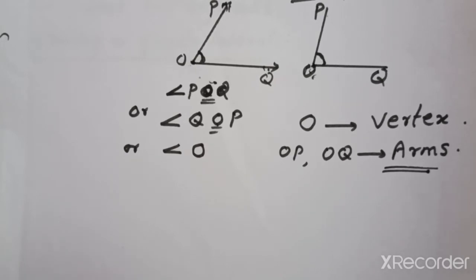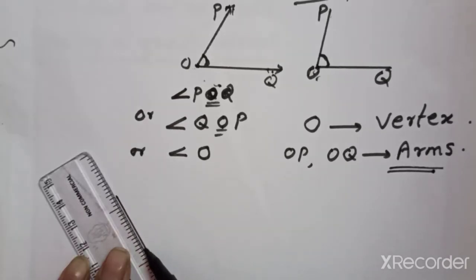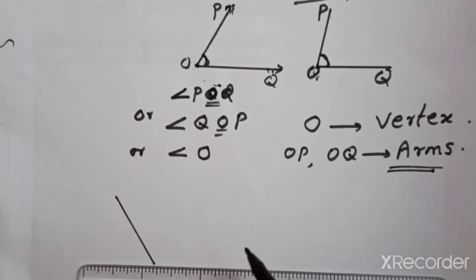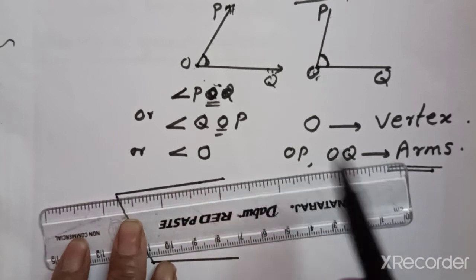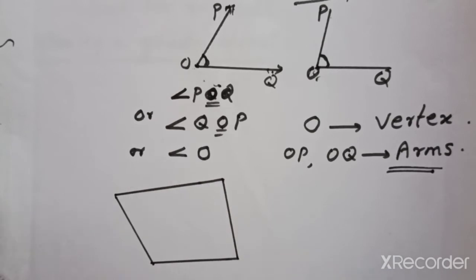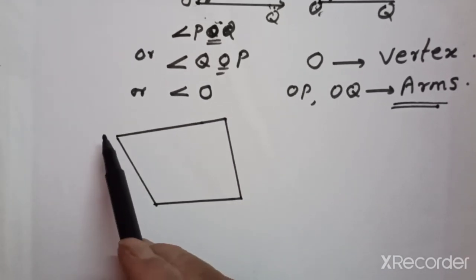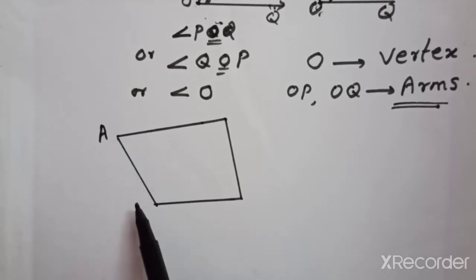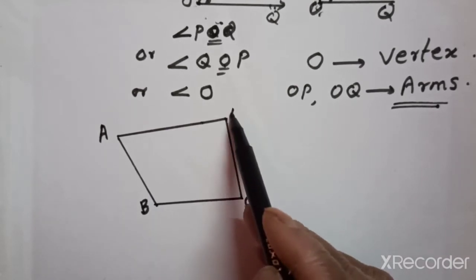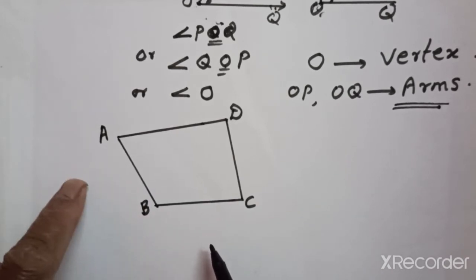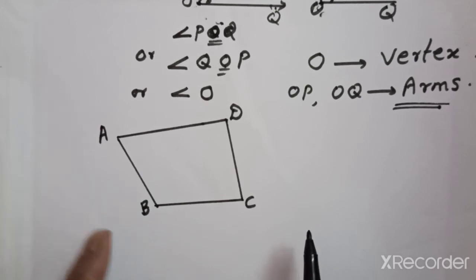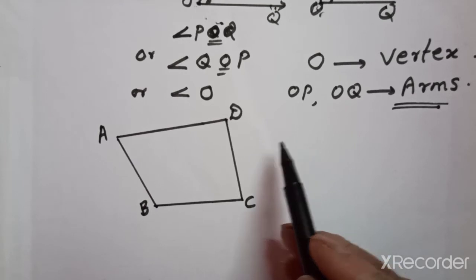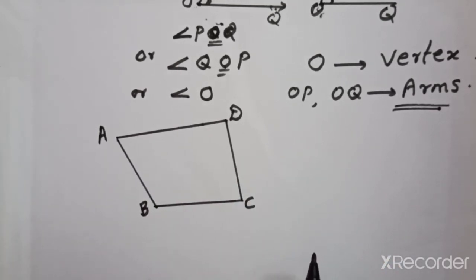Now let's go back to the quadrilateral. Let me draw one more quadrilateral with segments 1, 2, 3, and 4, labeling the vertices A, B, C, D. If you want to name this quadrilateral, you can give it any letters. One quadrilateral can be named in eight different ways.